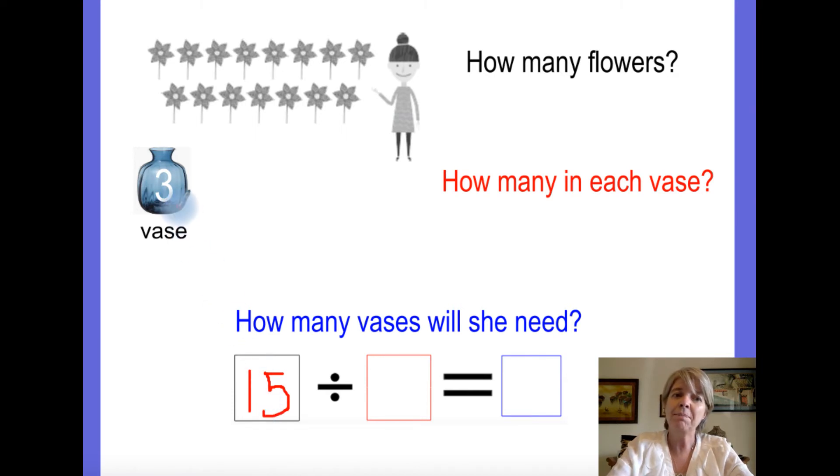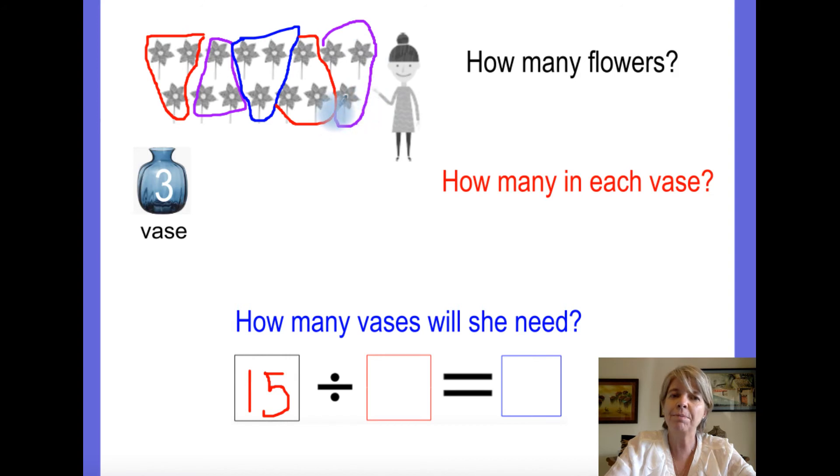So, she can put three flowers in every vase. So let's see how many vases she needs. We have to share it equally. So there's one, two, three, four, five. She's made five groups of three.